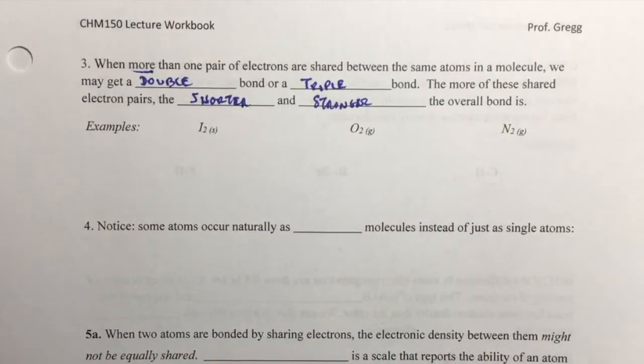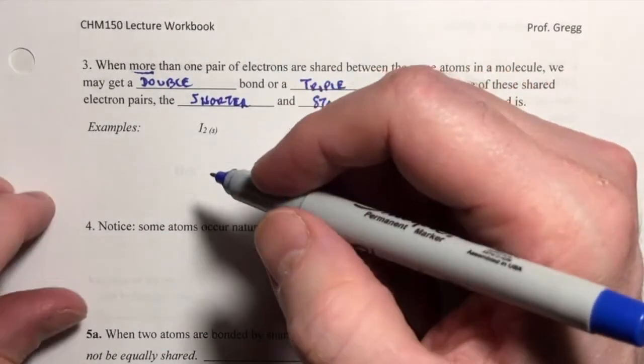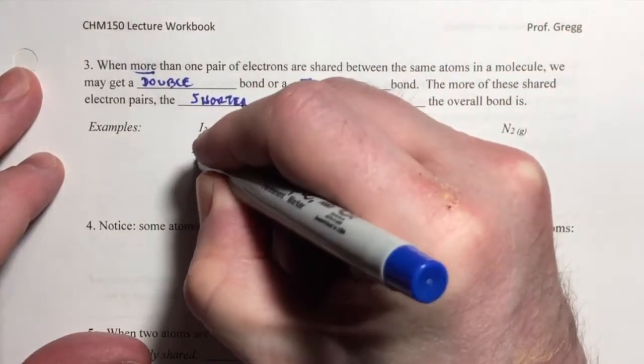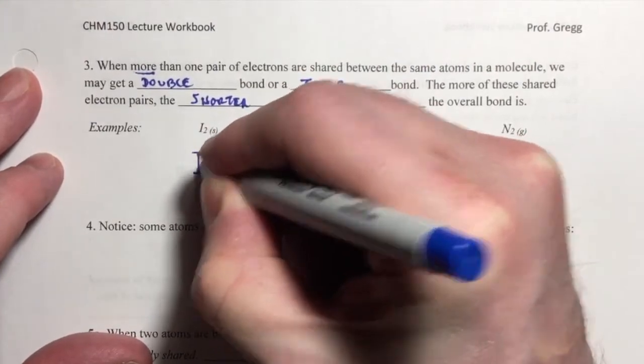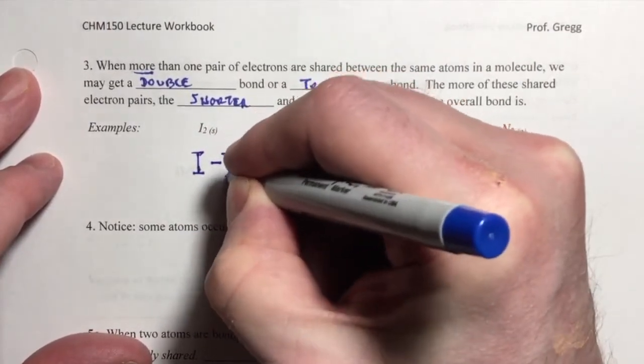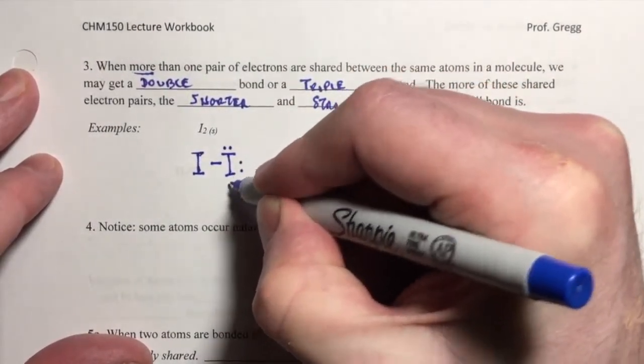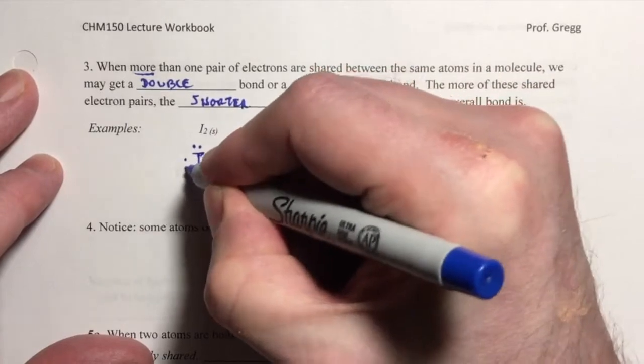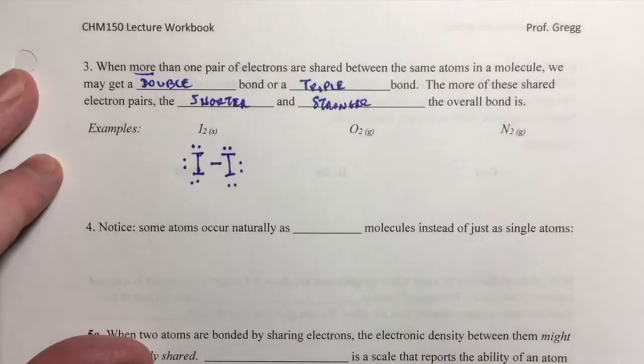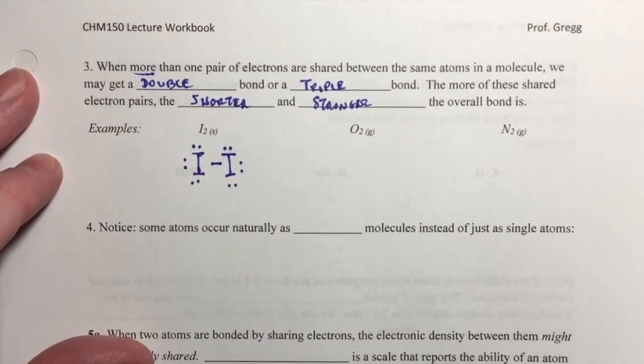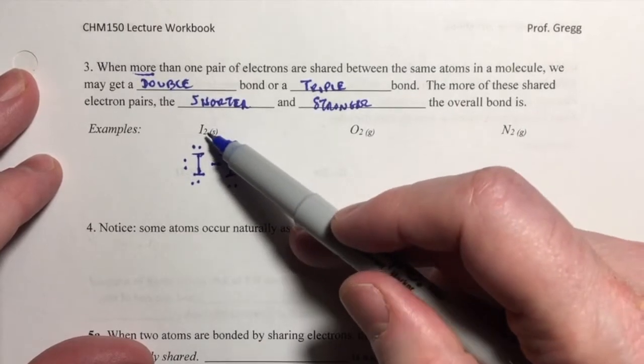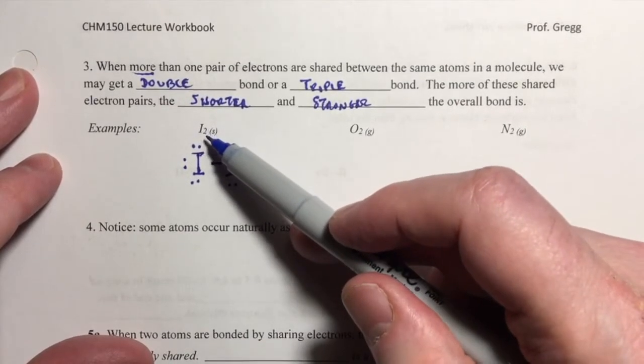So here are some examples. I2 molecule has a single bond between them, and then the unshared valence electrons are around them. That's for the I2 diatomic iodine element molecule.